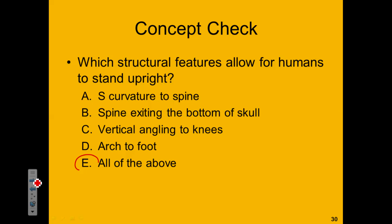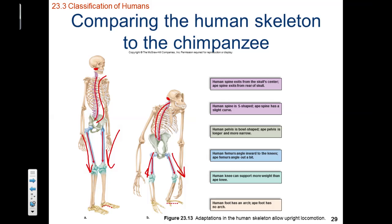The correct answer is E, all of the above. On this last slide, I forgot to emphasize that we, as humans, also have arched feet. This arching of our feet allows for more shock-absorbing compared to many chimpanzees and other apes, which are flat-footed and have less shock-absorbing capability within their feet.